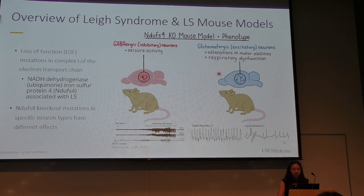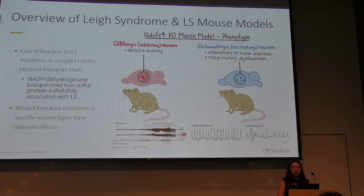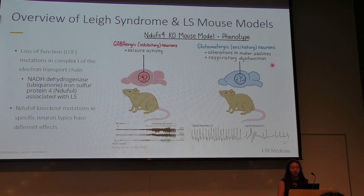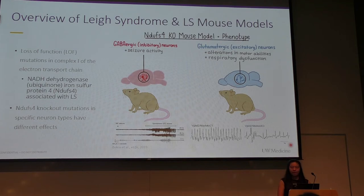As shown in the figure, mice with an NDUFS4 knockout in GABAergic or inhibitory neurons exhibit a seizure phenotype, shown in this EEG recording which shows a spontaneous generalized tonic-clonic seizure. While mice with an NDUFS4 knockout in excitatory neurons have motor impairments and respiratory dysfunction. This trace here shows a wild-type mouse with very regular breathing patterns, as opposed to the knockout mouse, which has irregular breathing abnormalities.